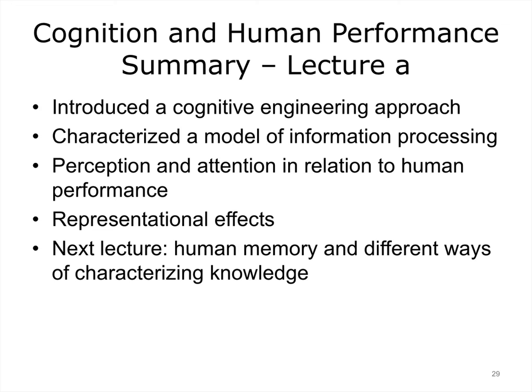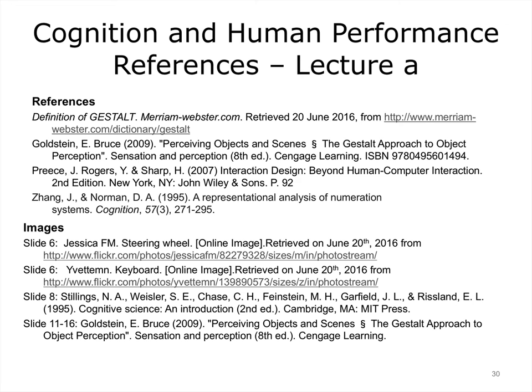This concludes Lecture A of Usability and Human Factors, Cognition and Human Performance. In this lecture, we explored different facets of human cognition in the context of a cognitive engineering approach. We introduced a basic model of human information processing and addressed issues pertaining to perception and attention. We also characterized how different kinds of representations can significantly affect the kinds of inferences people make — the same information can be expressed in very different ways. In the next section, we will discuss issues relating to human memory and characterize different ways to represent knowledge.